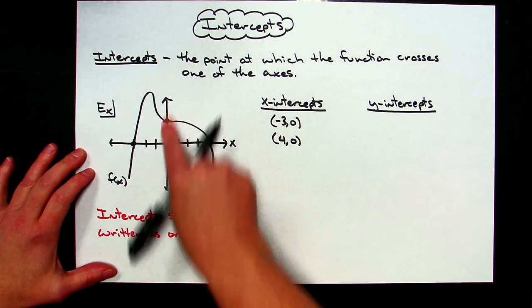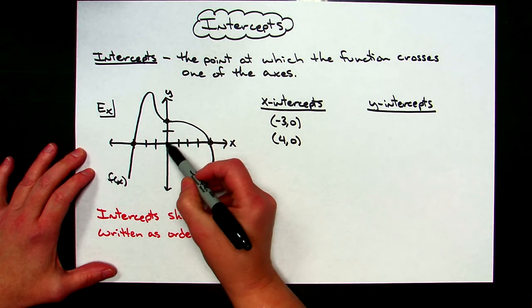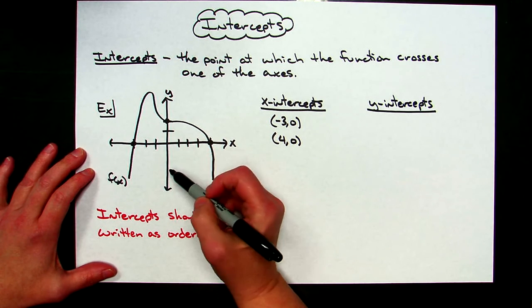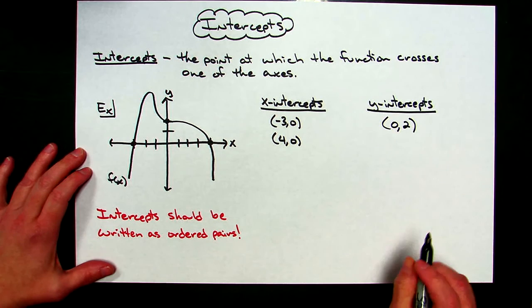Now for the y-intercepts, I would need to come to the y-axis and find where it crosses. It crosses at 2, and so then I have a y-intercept of 0, 2.